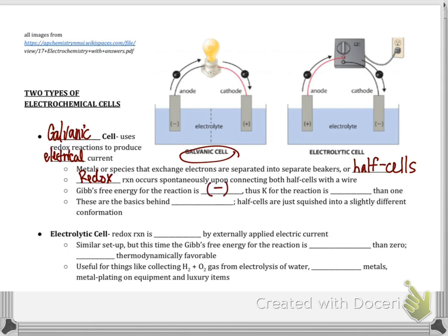Thus the K value for the reaction is going to be greater than one. And these are the basics behind batteries. The half cells in batteries that you would put in a TV remote, for example, are just squished into a little different conformation. But this is the idea. They're separated into two half cells. So one thing that I do to remember the types of cells is think about galvanic. It has a V in the center. The other word for this is sometimes called voltaic cell. And voltaic means it produces voltage. So that V is my little reminder that this one is a spontaneously occurring reaction that produces voltage.